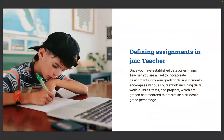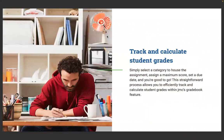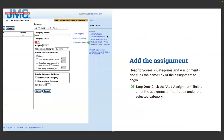Once you've established categories in JMC Teacher, you're all set to incorporate assignments in your gradebook. Assignments encompass various coursework including daily work, quizzes, tests, projects — anything that's graded. Anything you will record to determine a student's grade percentage is considered an assignment in JMC. Simply select a category to house the assignment, assign a maximum score, set a due date, and you're good to go. This straightforward process allows you to efficiently track and calculate student grades within JMC's gradebook feature.